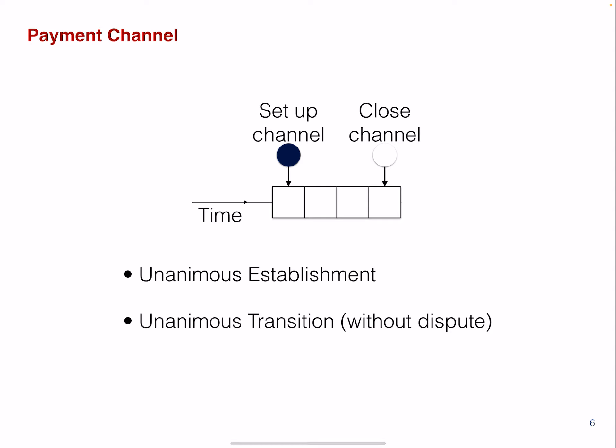So what's really important is that there's a unanimous establishment. So you can set up a channel with somebody that doesn't want to set up a channel with you. And you have a unanimous transition. So as long as there's no dispute, you work together collaboratively in order to solve any state changes.